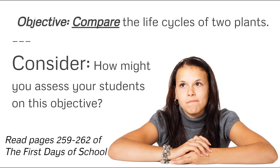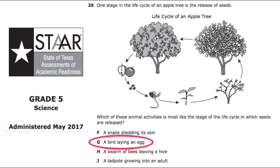Grant Wiggins and Jay McTie have formalized a lesson design process called Backward Design. Backward Design contends that instead of planning the lesson around favorite activities, a more effective lesson should start with the results you want to achieve. If you don't know where you're going, how will you know when you get there? In order to gain perspective as to how a standard may be assessed, you can look at the STAAR items that TEA, or the Texas Education Agency, has released.